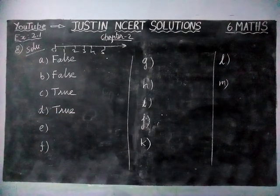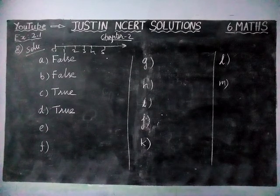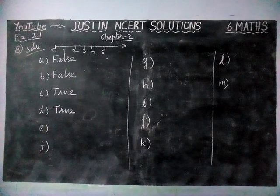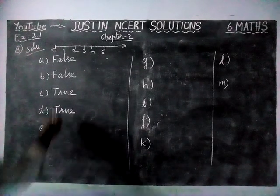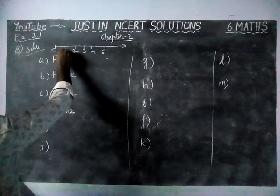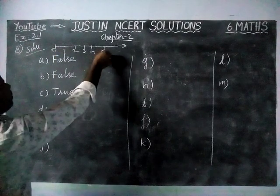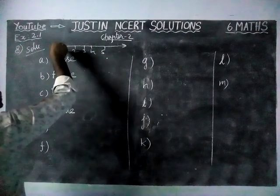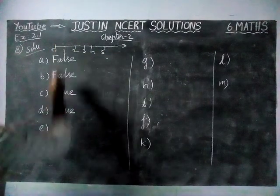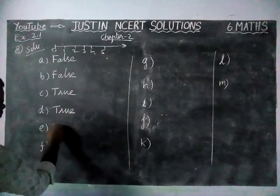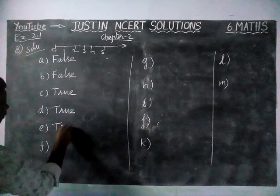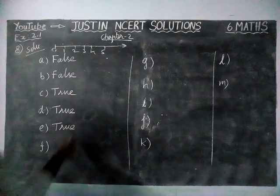Next, option E: 'All natural numbers are whole numbers.' Yes, that is true, because natural numbers start from 1, and all natural numbers are included in the whole numbers. Therefore, this statement is also true.